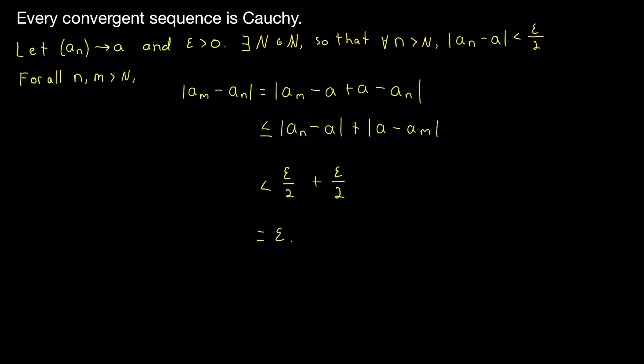So we began with a convergent sequence and showed there must exist a natural number big N so that the distance between any two terms of the sequence after the big Nth term is less than epsilon. Thus by definition, every convergent sequence is Cauchy.